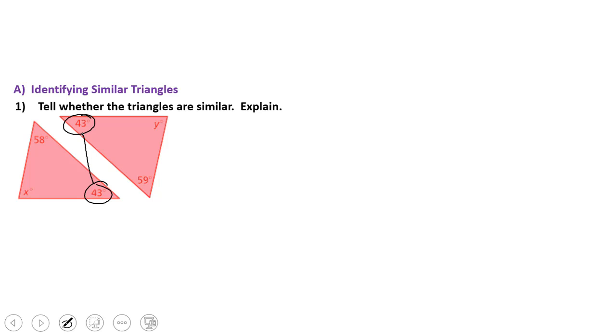Now, we have an angle 58, but the second triangle does not have an angle 58. The second triangle has an angle of 59, and the first one does not. So we have options. We either need to ask, is X equal to 59, or is Y equal to 58?